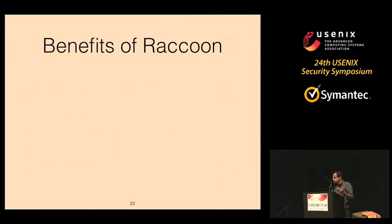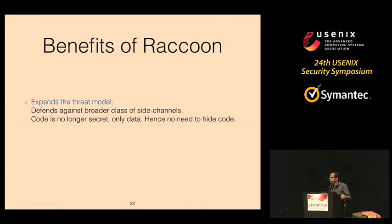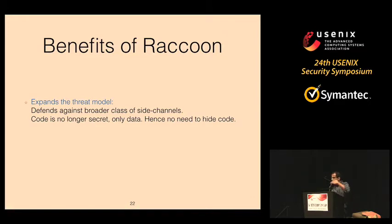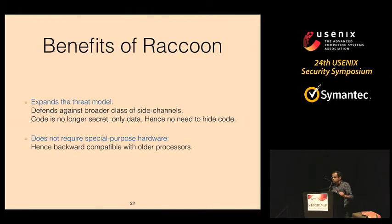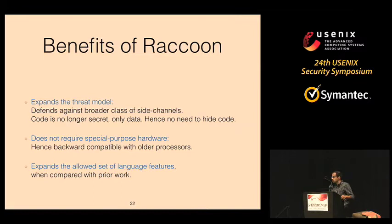This approach is not only intuitive, but brings additional benefits. First, it expands your threat model — you can close more side channels than were previously possible with a single solution. Your secrets are never stored in the code, so you don't need to prevent code from being leaked to the adversary; you can freely distribute it. Since this is program-level obfuscation rather than hardware-level, the solution is backward compatible — no hardware changes required. And it expands the set of language features supported, including function calls in secret contexts.